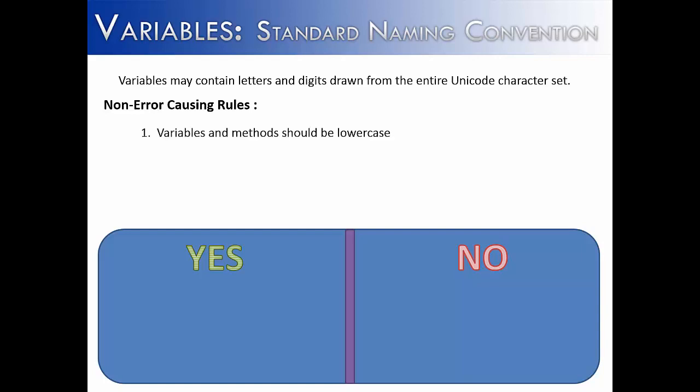The first one, variable names and methods should be lowercase. So whenever you name a variable or a method, it should always start with lowercase. You can see in the examples here that hello, variable, and last all start with lowercase letters, and then all of these are uppercase letters. Well, why is that a rule that variables and methods should be lowercase? Well, there's a very good reason for it, and it has to do with the next rule.